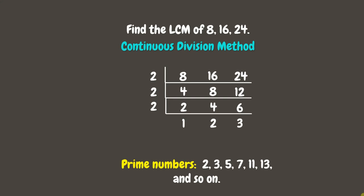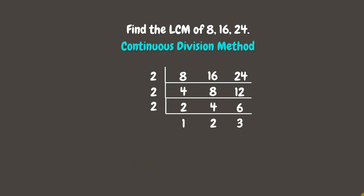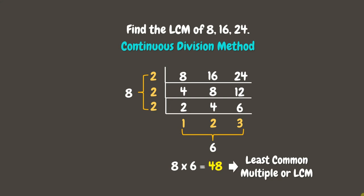At this point, we can no longer divide the numbers by any more prime numbers. Now, to find the LCM, let us multiply the common prime factors and the remaining quotients. For the common prime factors, we have 2 times 2 times 2, which is 8. For the remaining quotients, we have 1 times 2 times 3, which is 6. Now let's multiply these products: 8 times 6, which is 48. Therefore, 48 is the least common multiple of 8, 16, and 24.